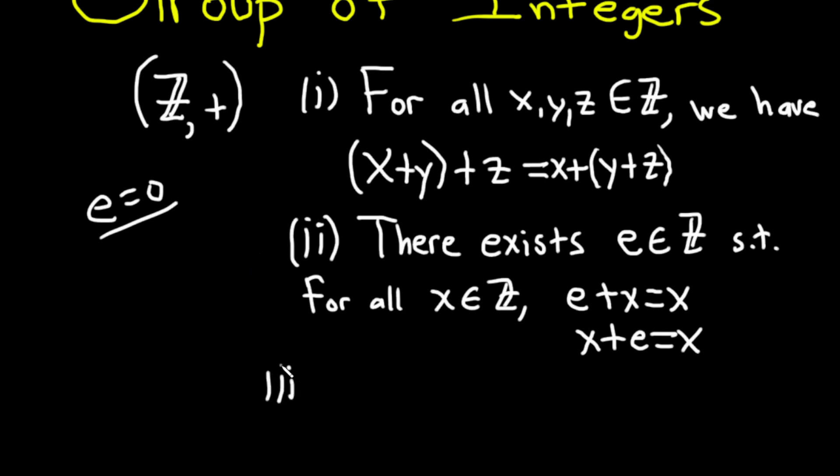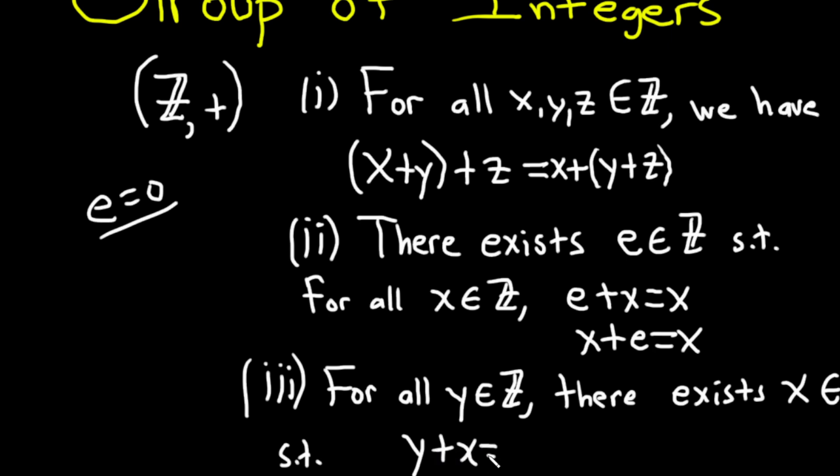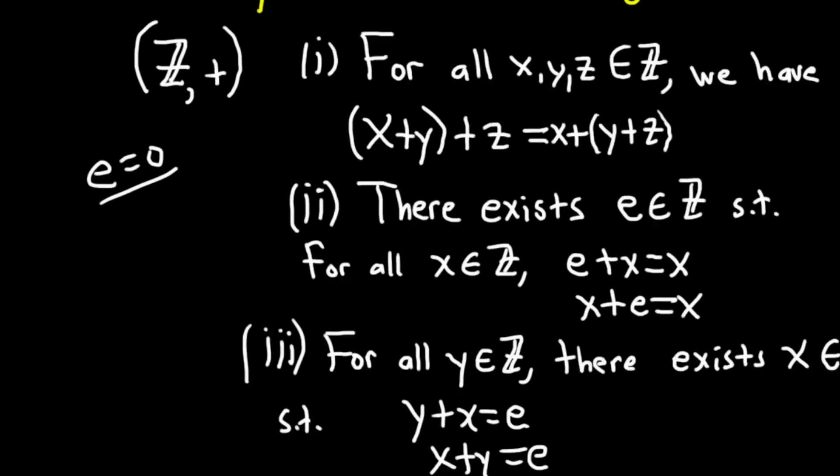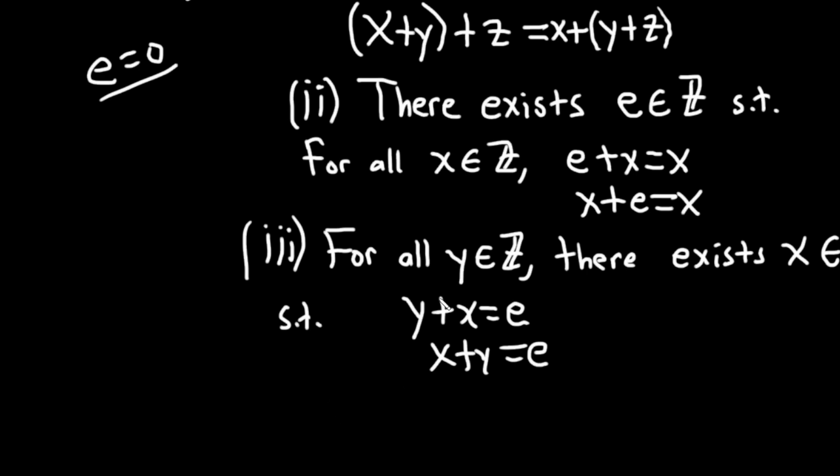And then three, the existence of inverses. So for all y in our set ℤ, there exists x in ℤ. So for each y, there is an x in ℤ such that y plus x is equal to e and x plus y is equal to e. So every element has an inverse. And so in our particular case for any y in ℤ, the element negative y would be the inverse.